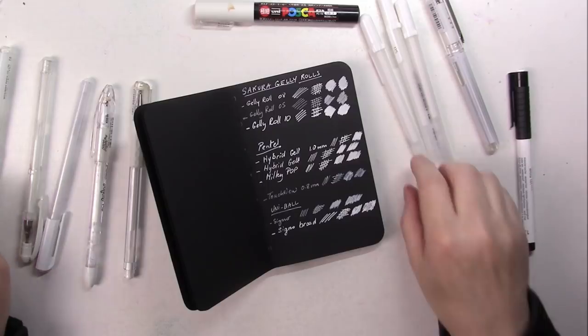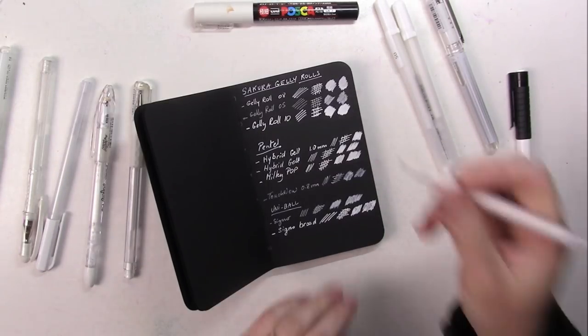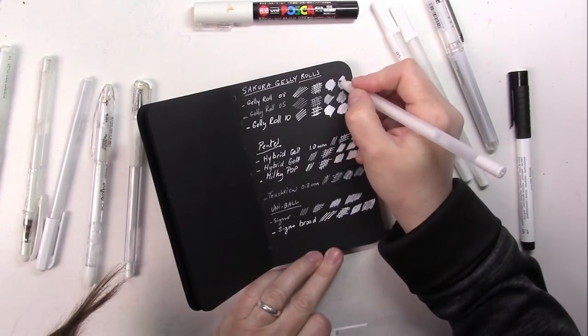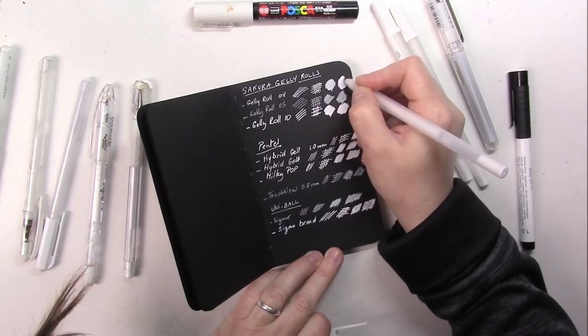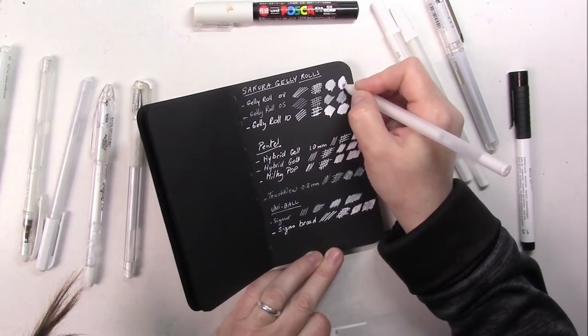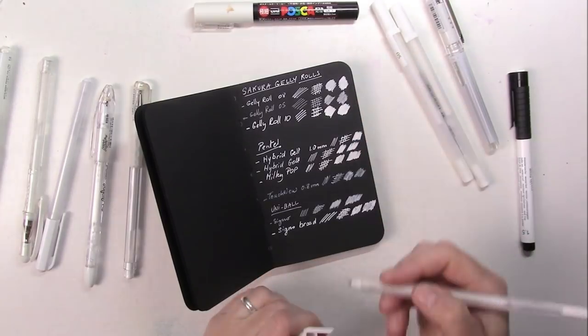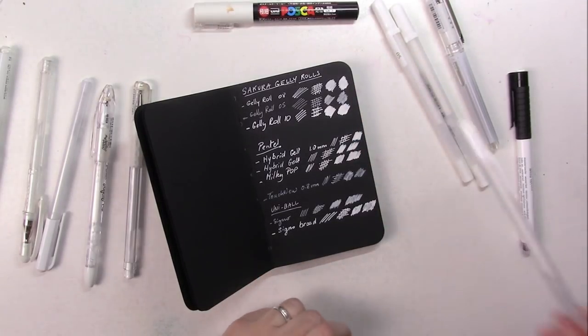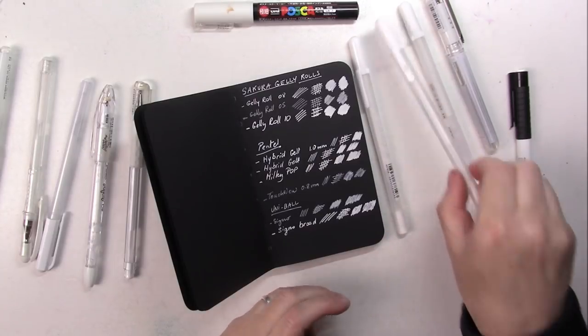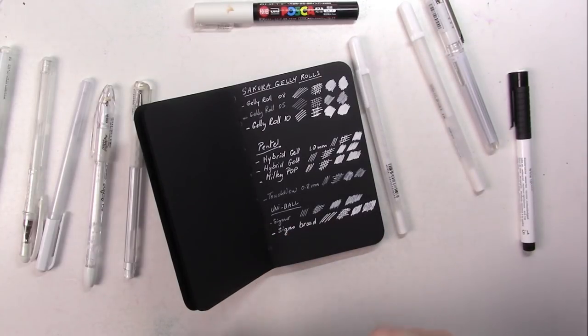Now I wanted to go over the second swatch here to see if it layers and to see if I can get whiter results. The reason why I wanted to let it dry is because if I don't, then the tip of the pen is gonna remove some of the ink.